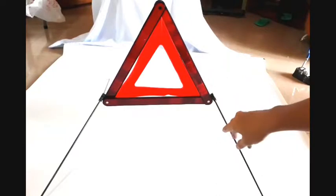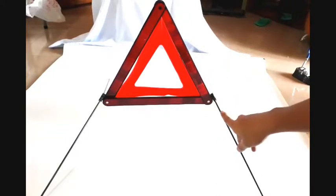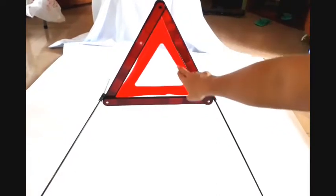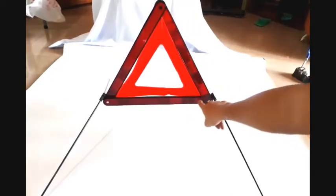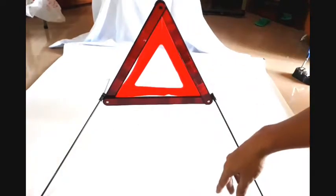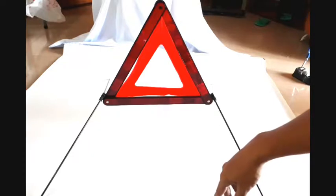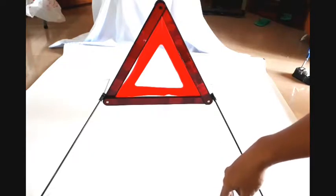So this is the first position. This is the reflectorized area and this is the standard reflectorized area. This is a double triangular reflectorized early warning device.